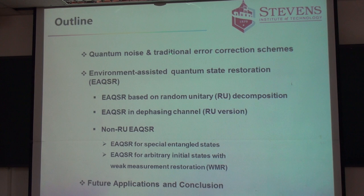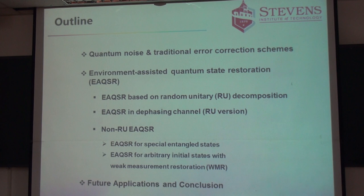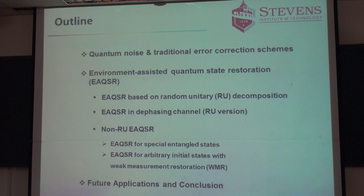Here is the outline of my talk. I will very briefly review the traditional error correction schemes, including Peter Shor's work, Steane's work, and also quantum feedback control. I think Shicheng also worked in this area for many years. And then the motivation for this research — our concentration here is not really about the conventional quantum error correction scheme. In this case, we perform a measurement on the noise, extracting some information from this measurement, so we can improve the efficiency of noise control. I will mention three relevant schemes here.